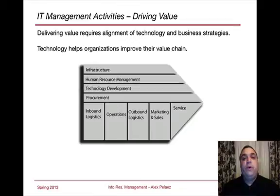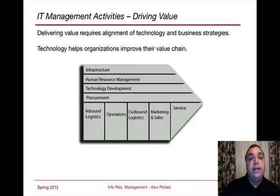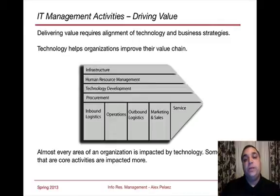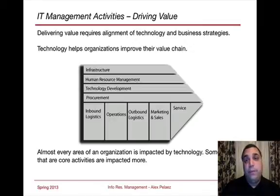Delivering value requires that we align the technology and the business strategy. If an individual business unit is looking to drive its organization in a certain direction, we need to make sure that we have the technology to fit that. It helps us improve our value chain overall, which is what we ultimately want. Every area of an organization is impacted by IT — some more than others, depending on the organization — but very few organizations will have a department that is not impacted by IT.